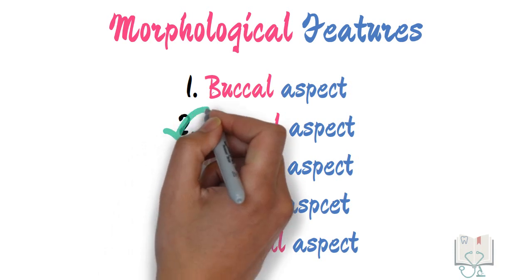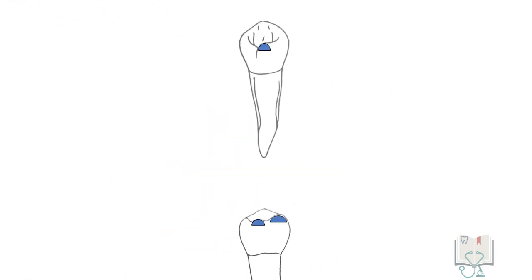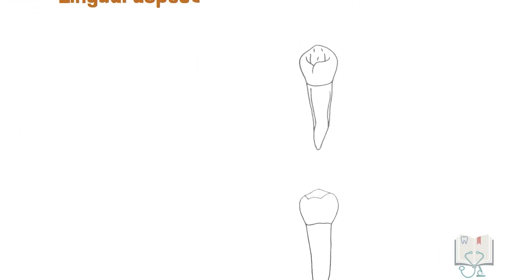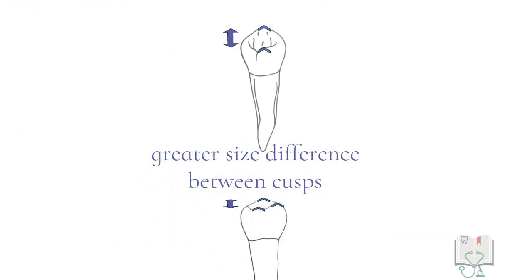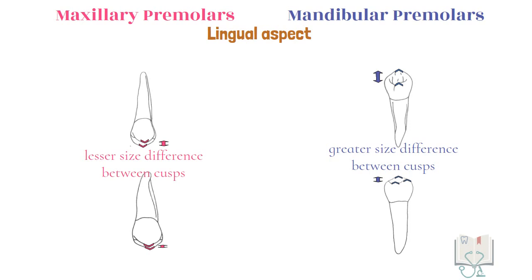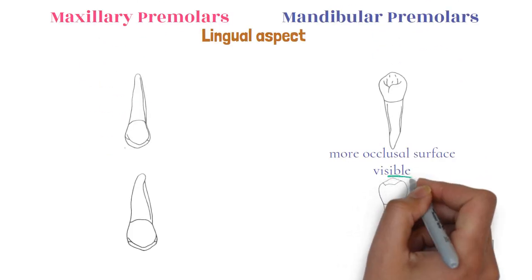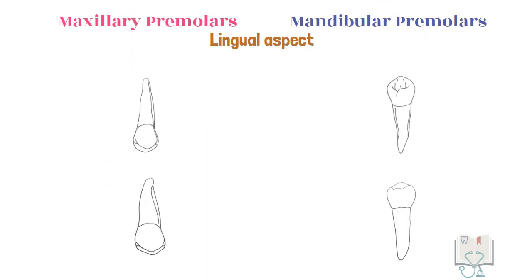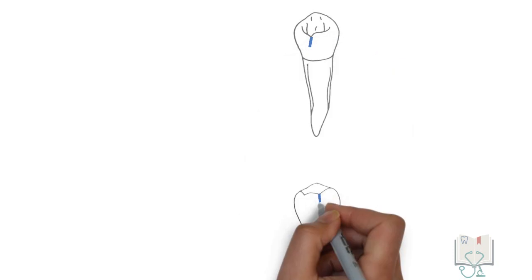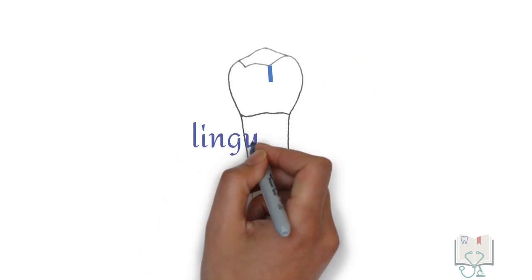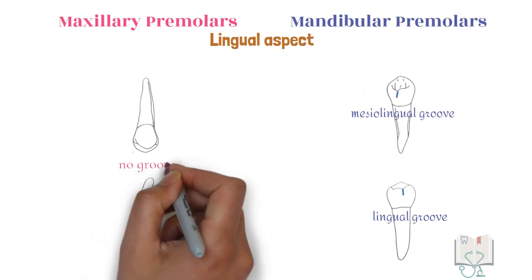Next, the lingual aspect. In mandibular premolars, the lingual cusps are smaller in size in comparison to the lingual cusps in maxillary premolars. Moreover, in mandibular premolars, the difference between the size of the buccal cusp and lingual cusp is greater compared to maxillary premolars, where they are almost of the same size. Due to this difference, in mandibular premolars, more of the occlusal surface is visible than in maxillary premolars. In both mandibular premolars, a developmental groove is seen — the mesio-lingual groove in the first premolar and the lingual groove in the second premolar. No such groove is present in maxillary premolars.